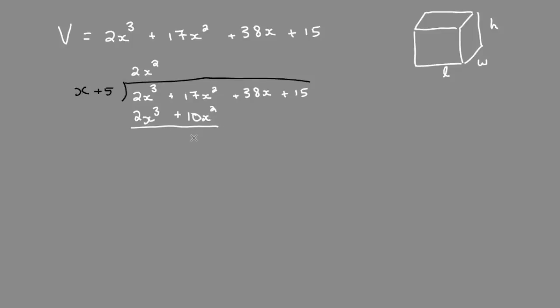What times x equals 7x squared? 7x. Now multiply that into your binomial, subtract.